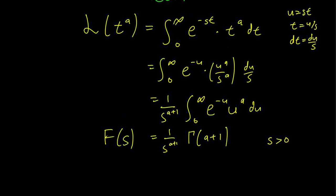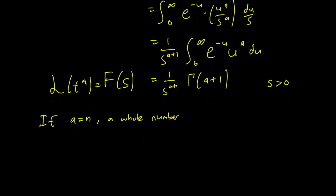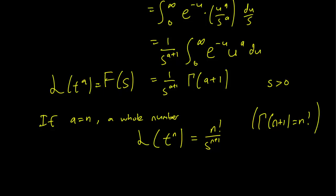One thing to notice here is that if a is n, a positive integer, then we have the Laplace transform of t^n equal to n factorial over s^(n+1), since gamma(n+1) is equal to n factorial, as we discussed in the previous video. And that's it.